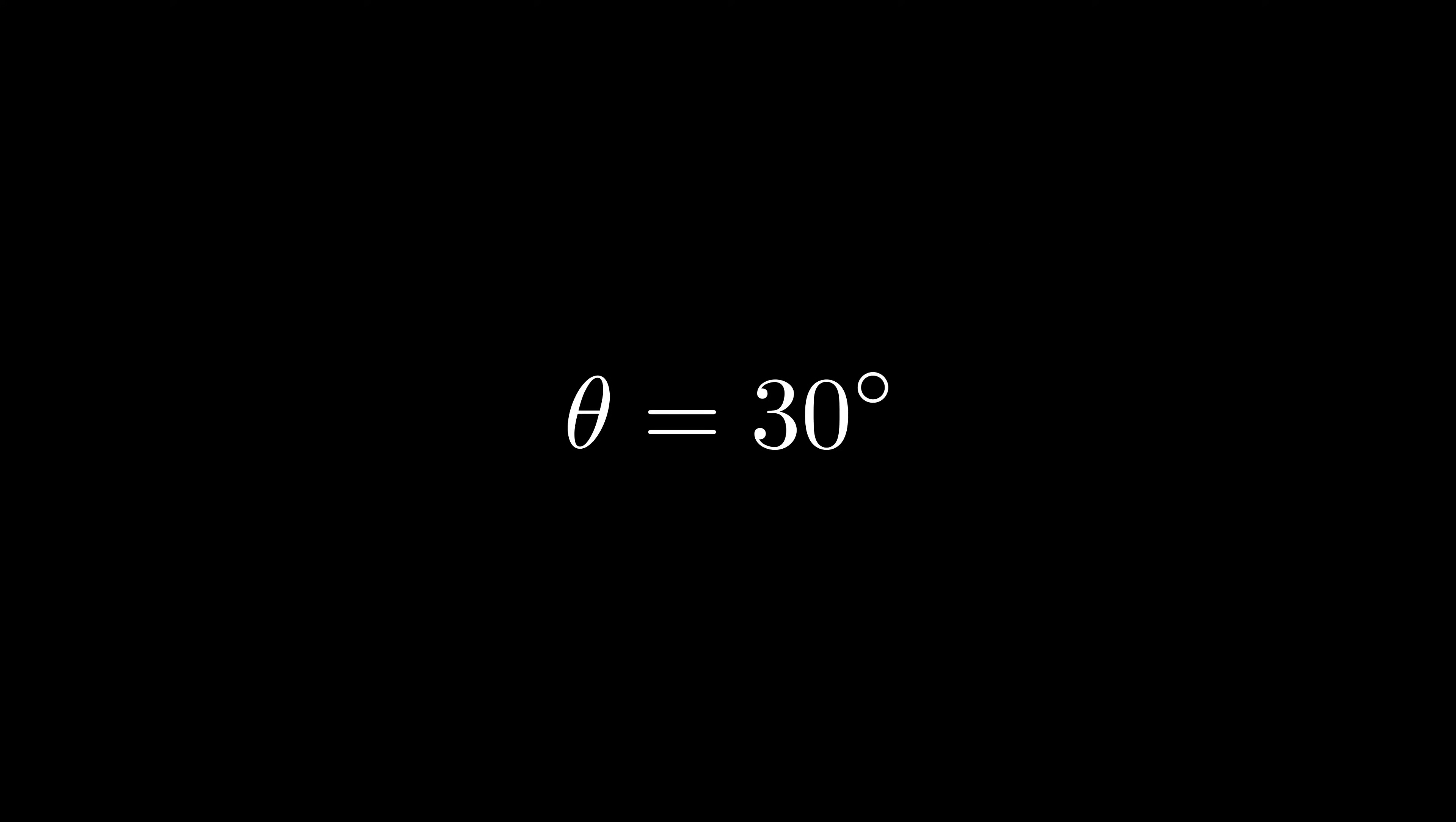Angles, whether they are radians or degrees, are often denoted by the Greek symbol theta. Certain symbols, such as lowercase pi and Euler's number e, are reserved for special constants you will see all over mathematics.